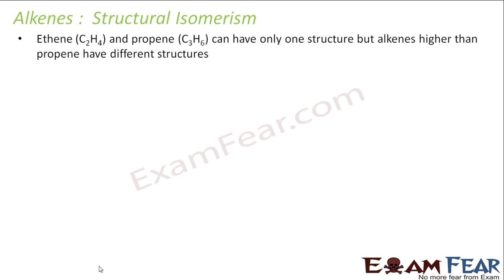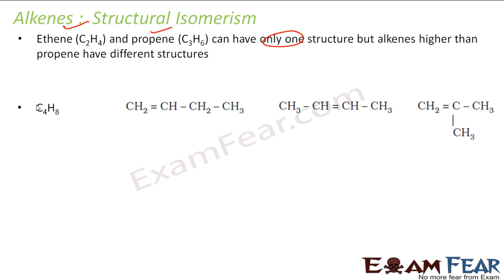Now we have some structural isomerism of alkenes. Similar to alkanes, we will see structural isomerism in alkenes also. Ethene and propene have only one structure, but higher alkenes have different structures. For example, if you take C4H8, it is butene — this compound has three structures: 1, 2, and 3.